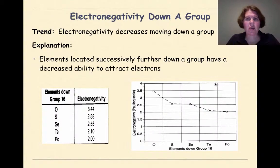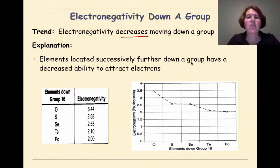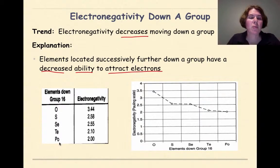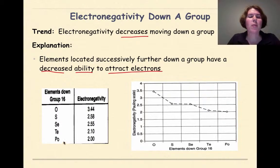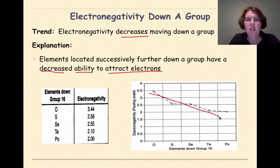Now let's look at electronegativity down a group. The general trend is that electronegativity will decrease moving down a group, because elements located successively further down a group have a decreased ability to attract electrons. Looking at the data from oxygen to polonium, oxygen has a high electronegativity of 3.44, but as we go down the group, polonium has an electronegativity of 2. The general trend is that electronegativity decreases as we move down the group.